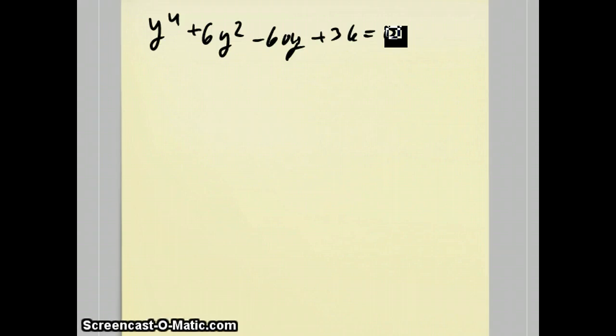Now, here comes the clever tricks. First step that you do is you bring the 60y over to this side and you subtract the 36. Now, we want to make both of these sides into perfect squares. The left one's going to be a perfect square with a 4th degree, 2nd degree, and a constant, and the right's going to have a 2nd degree, 1st degree, and a constant.